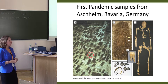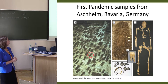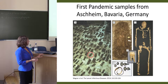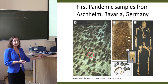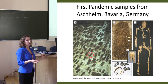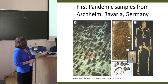Our collaborators sent material from this cemetery to us. The individual that we got the best DNA from comes from a double interment. The grave goods dated to the second half of the sixth century, and it was also radiocarbon dated to 533 AD plus or minus 98 years — so within the right time frame.